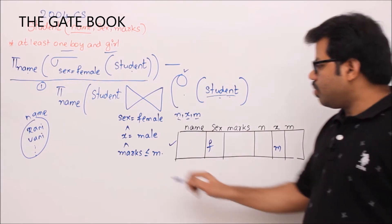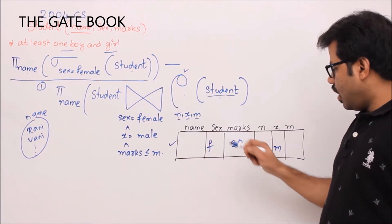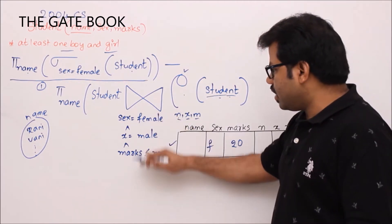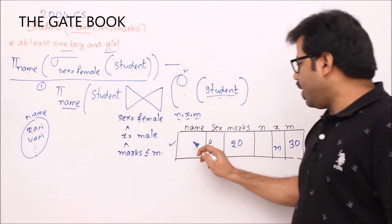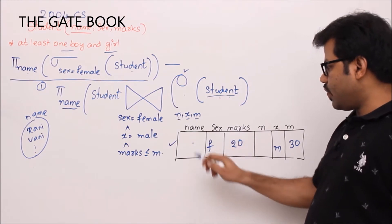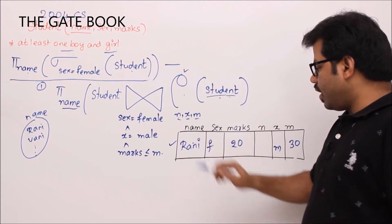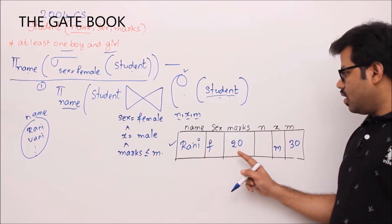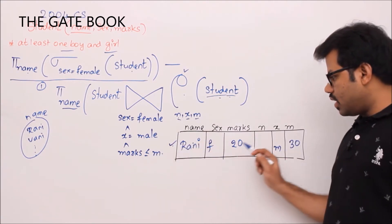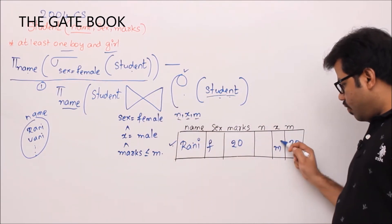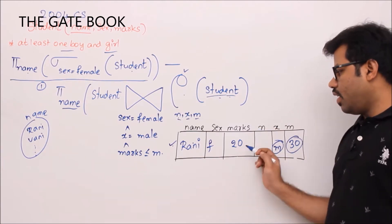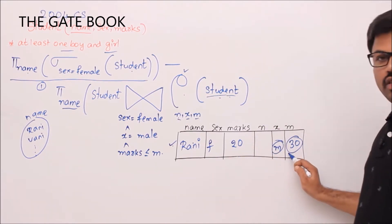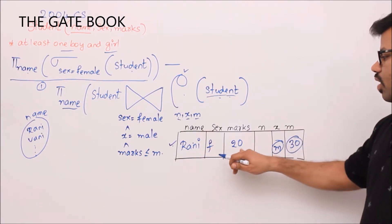To understand the pattern, let's fill in sample values. Set sex = female, x = male, marks = 20, and m = 30 so that 20 ≤ 30 is satisfied. In this scenario, we are printing name — for example 'Rani' — which is the female student's name. The condition is satisfied, so Rani gets printed.